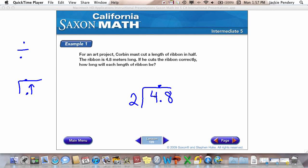And now we divide like normal. So, 2 goes into 4 twice. 2 times 2 is 4. We subtract. We bring down. 8 goes into 2, 4 times. 4 times 2 is 8. We subtract. And we are finished. So, the answer is 2.4 meters.